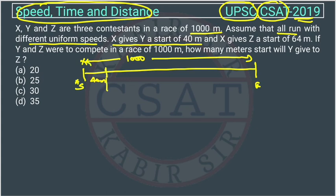Y is standing here. X is here and X gives Z a start of 64 meters. So this is Z. Total from here, X to Z, is 64 meters.